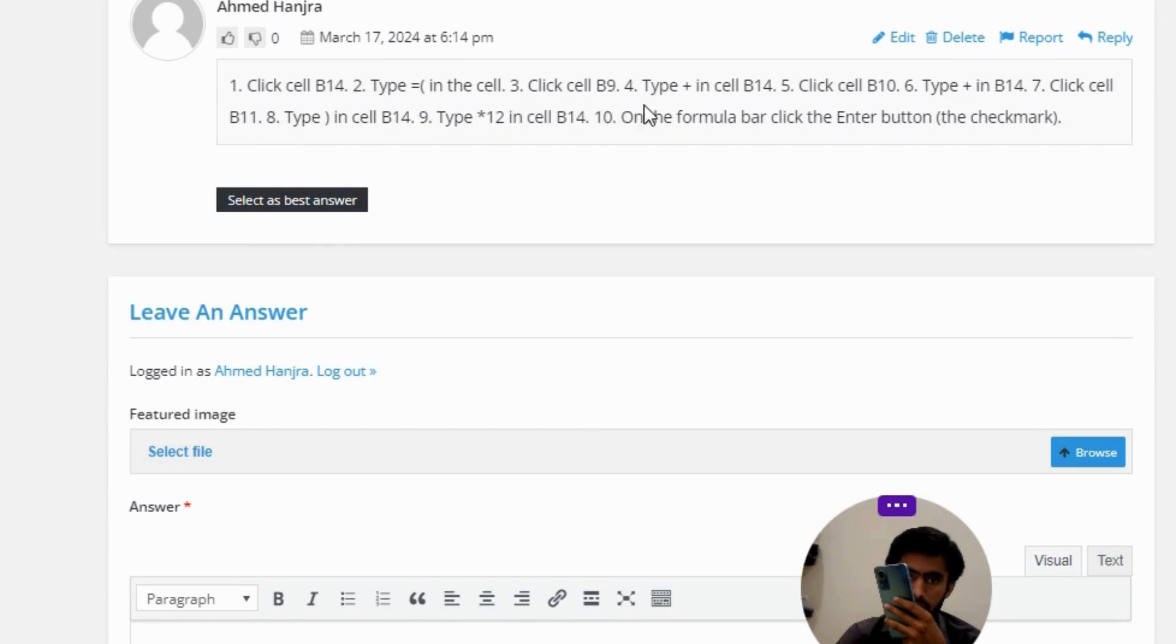Number three, click cell B9. Number four, type plus in cell B14. Number five, click cell B10. Number six, type plus in B14.